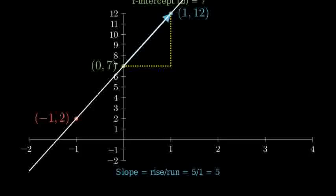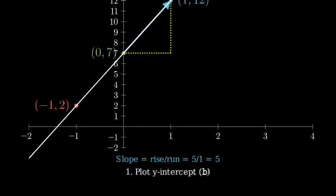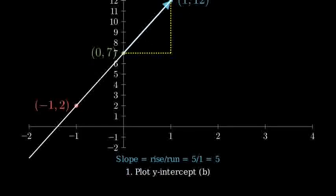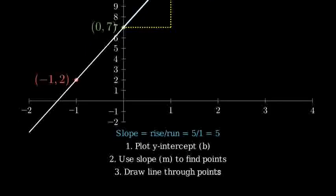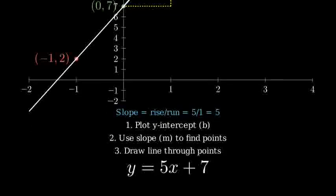To summarize, when graphing a linear equation in slope-intercept form: First, identify the y-intercept and plot it. Then, use the slope to find additional points. Finally, draw a straight line through these points. Remember, every point on this line represents a solution to our equation, y equals 5x plus 7.